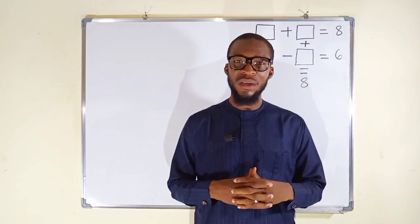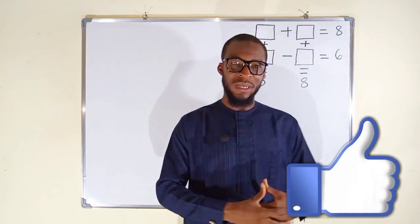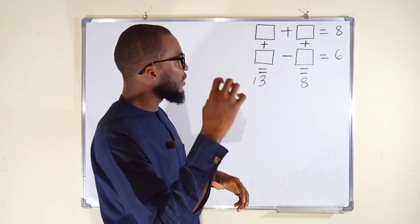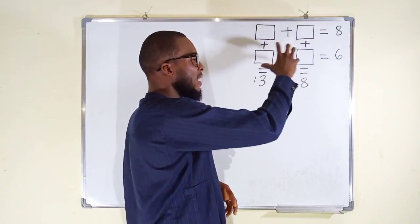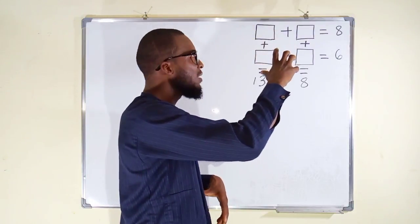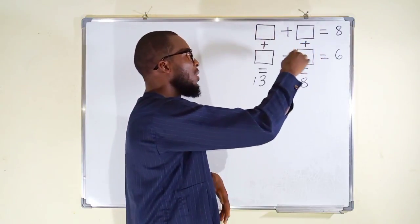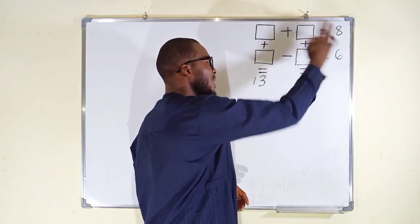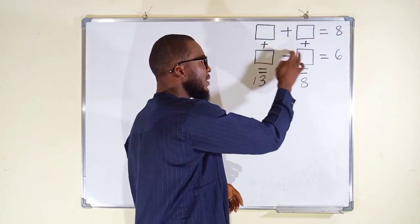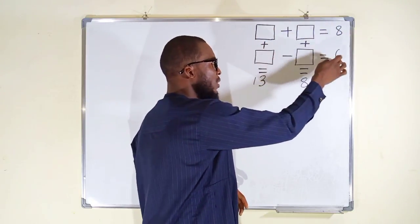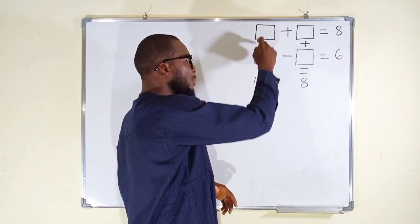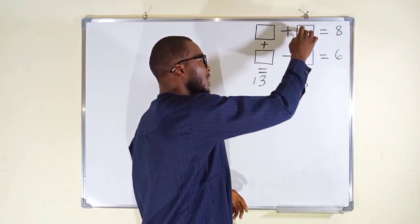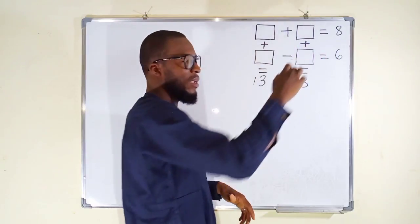Don't forget to hit that like button. We want to find some numbers that will fit these boxes, and in each case the statement will be true. We have a number plus another number that gives us 8, a number minus another number that gives us 6, a number plus another number that gives us 13, and a number plus another number that gives us 8.